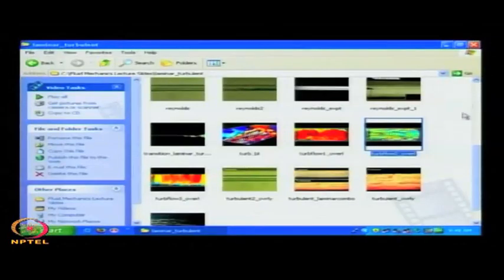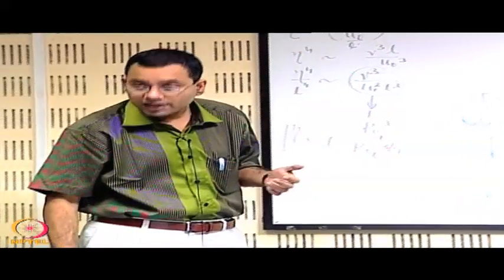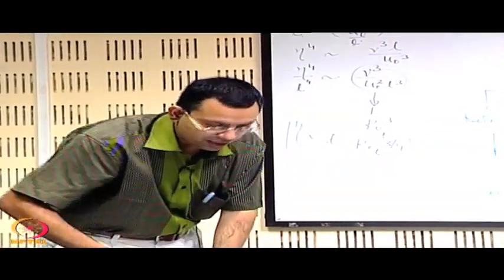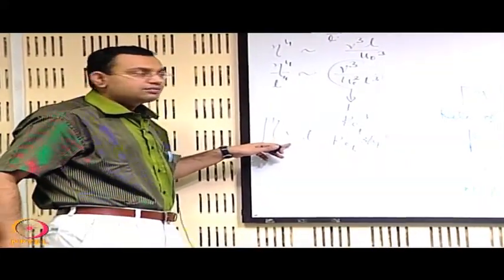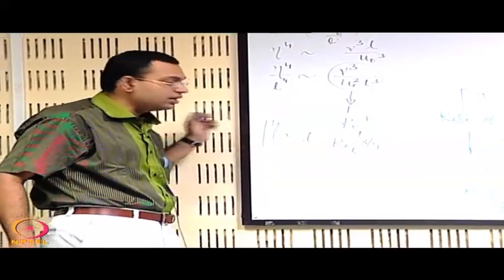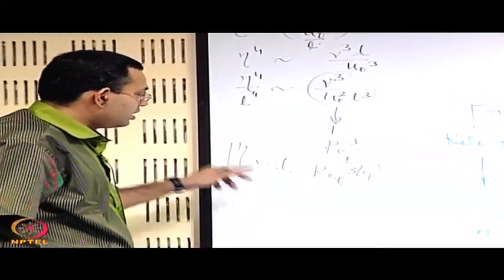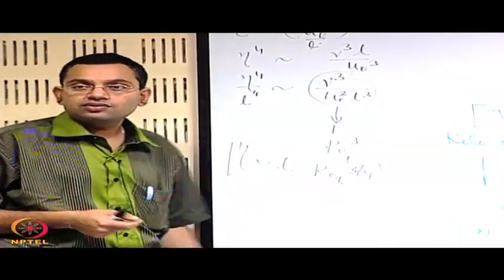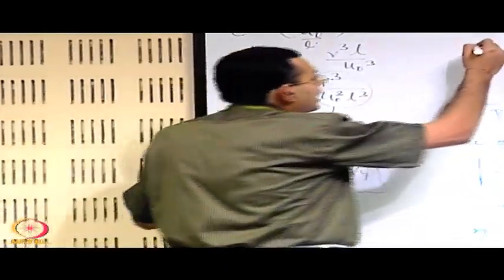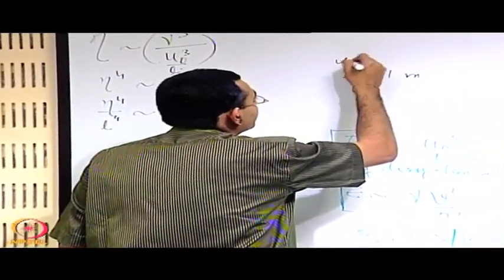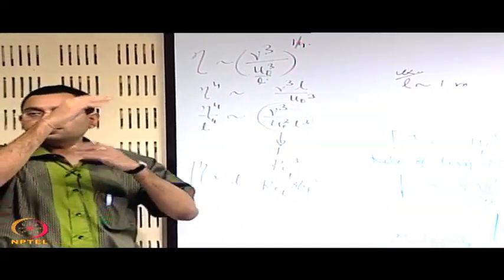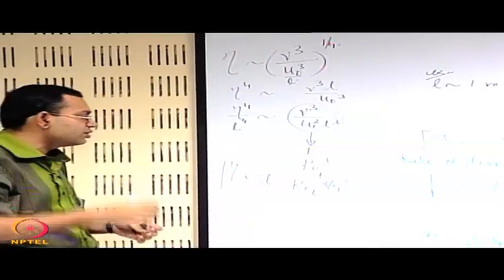The whole idea of this understanding was to appreciate that you may have a wide range of length scales of the eddies. To quantify that, we are interested in getting a feel for the difference between the system length scale and the Kolmogorov length scale — the smallest eddy length scale. The system length scale, or the largest eddy length scale, is sometimes known as the integral length scale. Let us say that l is of the order of 1 meter as an example, with easy round numbers.